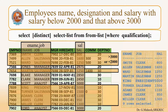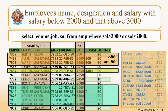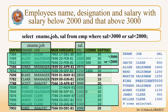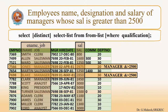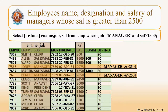Now the query is employee's name, designation, and salary with salaries below 2000 and also above 3000. Here the condition uses OR — salary < 2000 OR salary > 3000. If you apply AND operator here, the conditions are mutually exclusive and cannot be satisfied for any row, so the correct operator is OR. Another query is employee's name, designation, and salary of managers whose salary is greater than 2500. Here the condition is JOB = 'MANAGER' AND SAL > 2500, and the results are illustrated in the PPT.